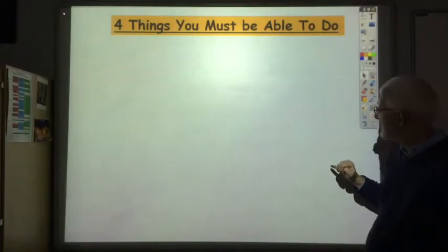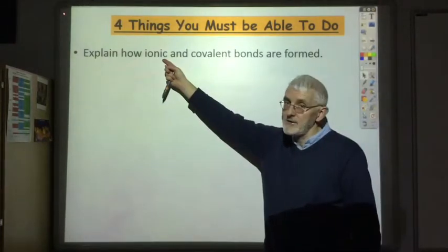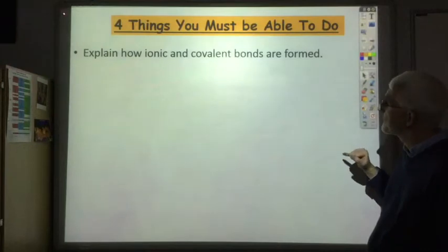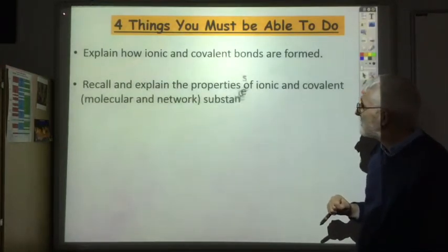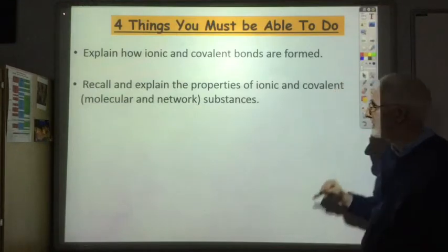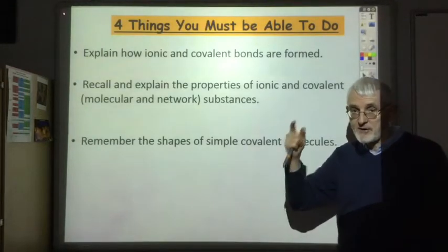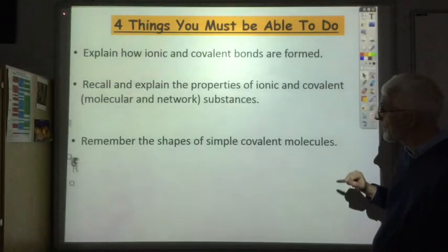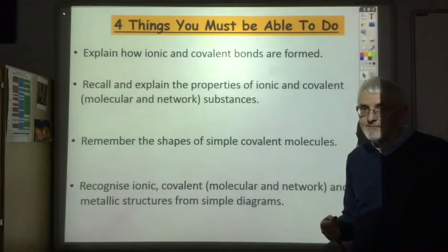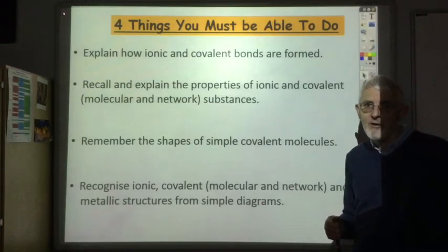Finally, four things you should be able to do: explain how ionic and covalent bonds are formed - gaining and losing electrons, or sharing electrons, in each case to achieve a full outer shell; recall and explain the properties of ionic and covalent substances including melting and boiling points and conductivity; remember the shapes of simple covalent molecules for two, three, four, and five atoms; and recognise ionic, covalent, and metallic structures from simple diagrams.